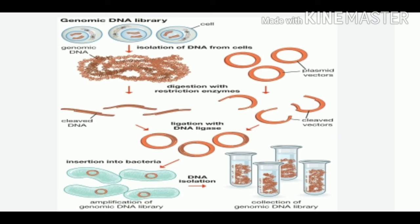First of all, the genomic DNA is isolated from the cells. Second, this genomic DNA is digested with the help of a restriction enzyme. In the next step, the DNA fragments or the cleaved DNA is ligated into a suitable vector. Thereafter, this recombinant DNA molecule is inserted into the bacteria, which leads to amplification of the genomic DNA library. After this, DNA isolation can be done for the collection or formation of the genomic DNA library.